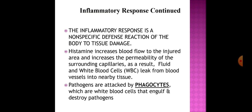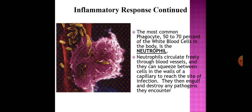As a result, fluid and white blood cells leak from blood vessels into nearby tissue. Pathogens are attacked by phagocytes, which are white blood cells that engulf and destroy pathogens. The most common phagocytes — comprising 50–70% of white blood cells in the body — are neutrophils. Neutrophils circulate freely through blood vessels and can squeeze between cells in the walls of a capillary to reach the site of infection, where they engulf and destroy any pathogens they encounter.